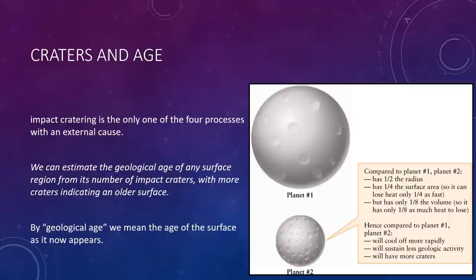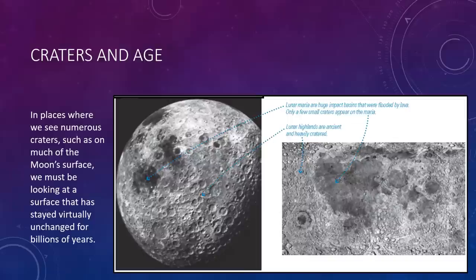Notice that impact cratering is only one of the four processes with an external cause—the random impacts of objects from space. This fact leads to one of the most useful insights in planetary geology. We can estimate the geological age of any surface region from its number of impact craters, with more craters indicating an older surface. And by geological age, we mean the age of the surface as it now appears. A geologically young surface is dominated by features that have formed relatively recently in the history of the solar system, while a geologically old surface still looks about the same today as it did billions of years ago.